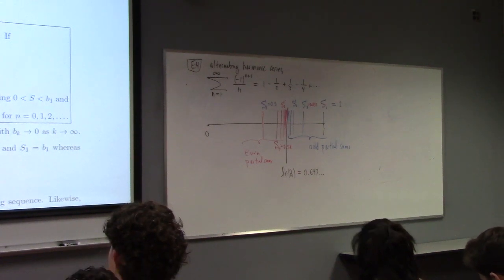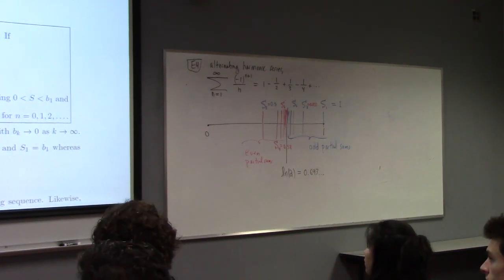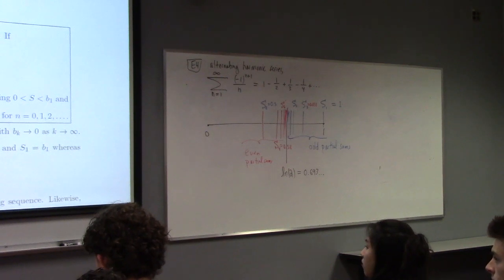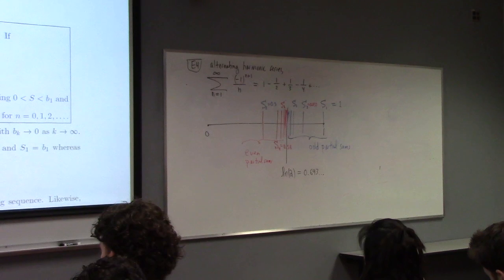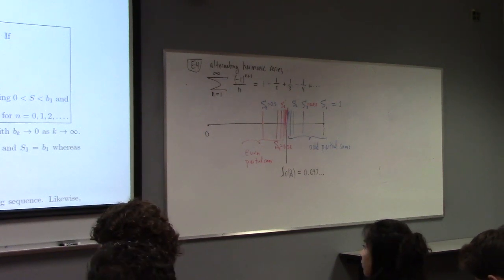Where all the b's are positive. If you have that, and you have that, they have to be a decreasing list. That's important. They have to be decreasing. They have to have limit zero as k goes to infinity. If you have all that, then this is a convergent alternating series, and this is the alternating series test.